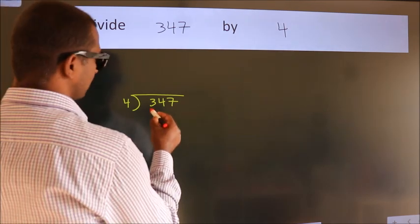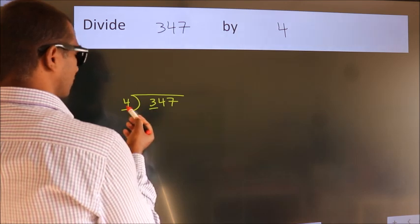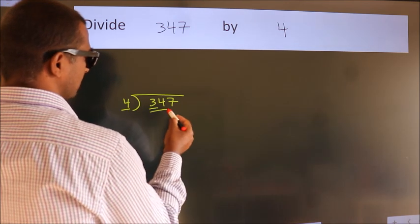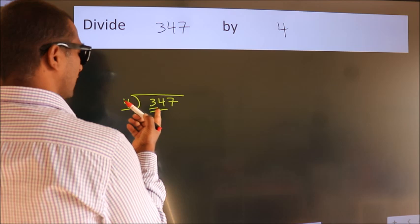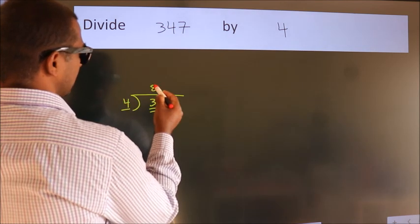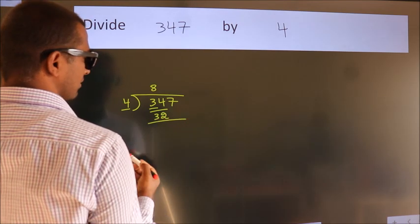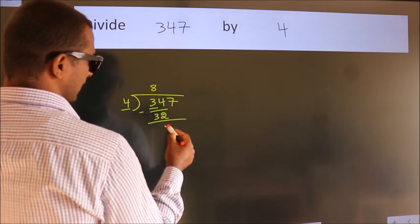Here we have 3, here 4. 3 is smaller than 4, so we should take 2 numbers: 34. A number close to 34 in the 4 table is 4 times 8, which is 32. Now we subtract and get 2.